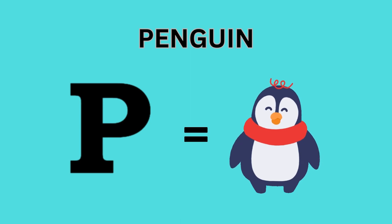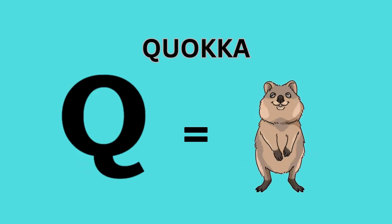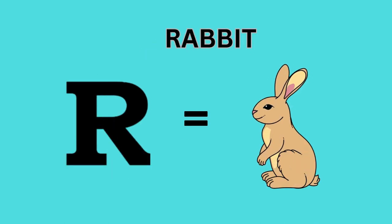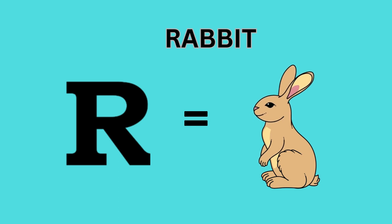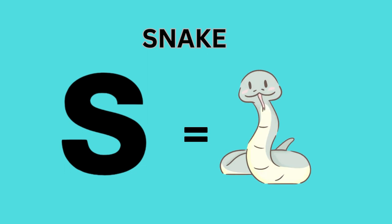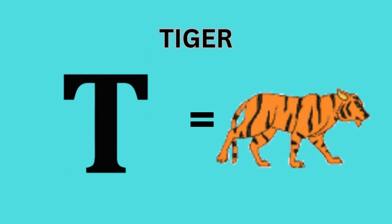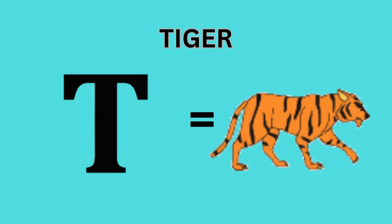P for Penguin. Q for Quokka. R for Rabbit. S for Snake. T for Tiger.